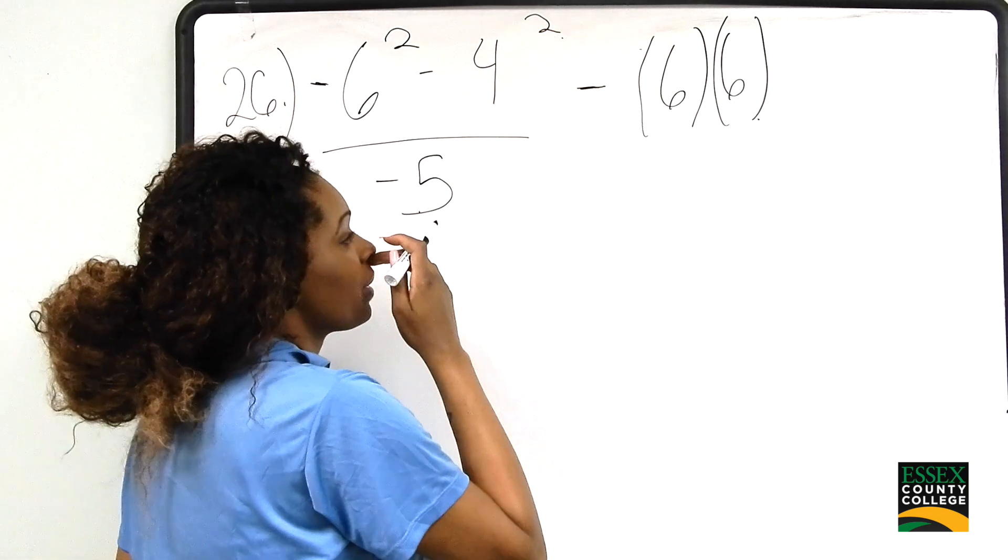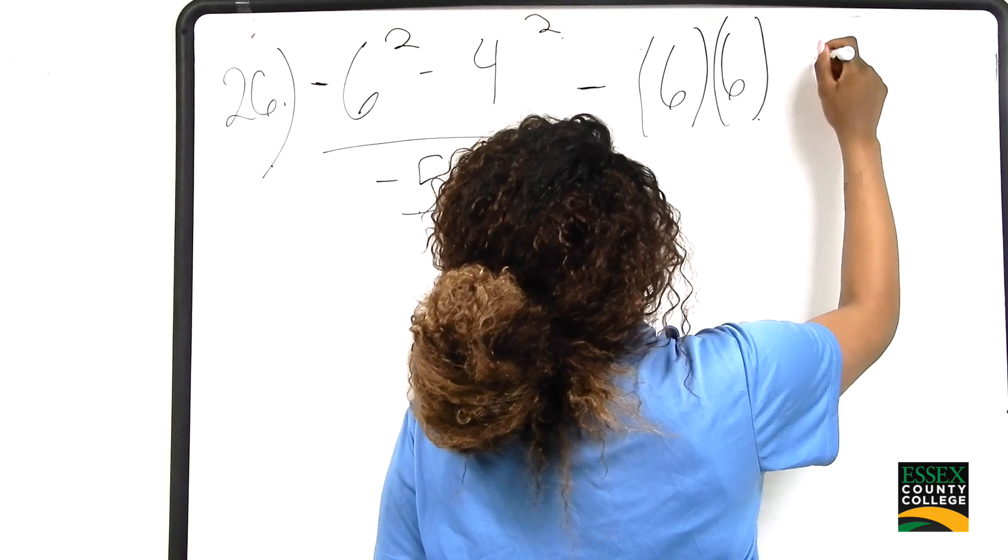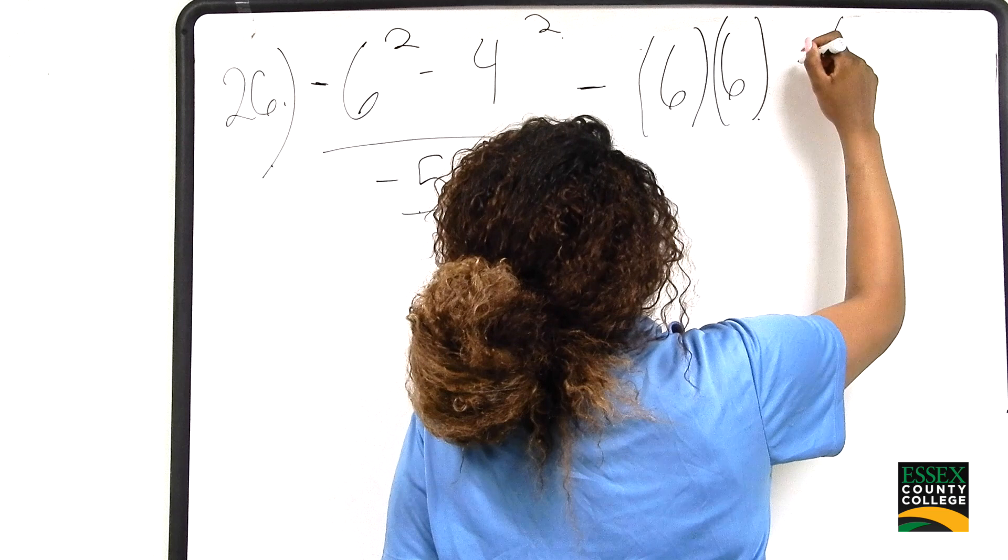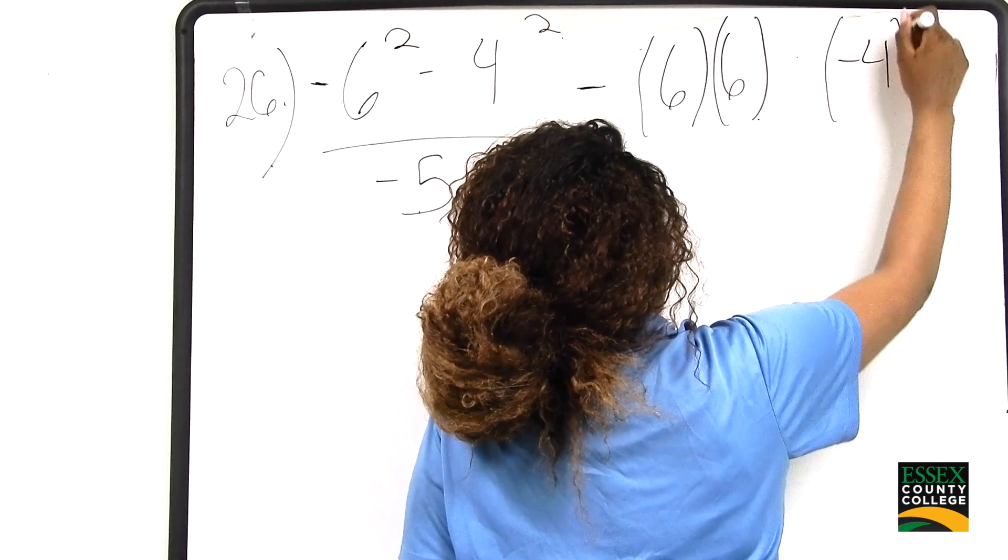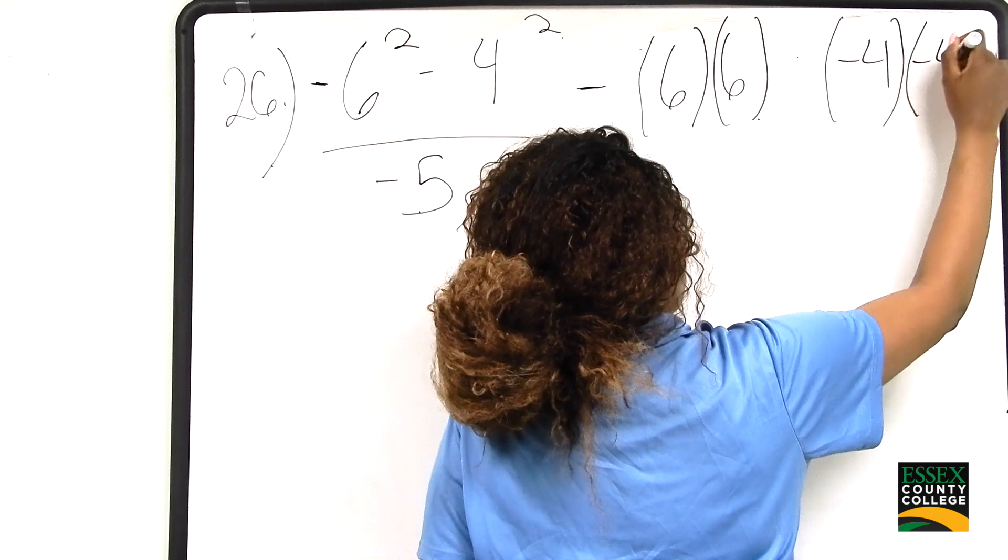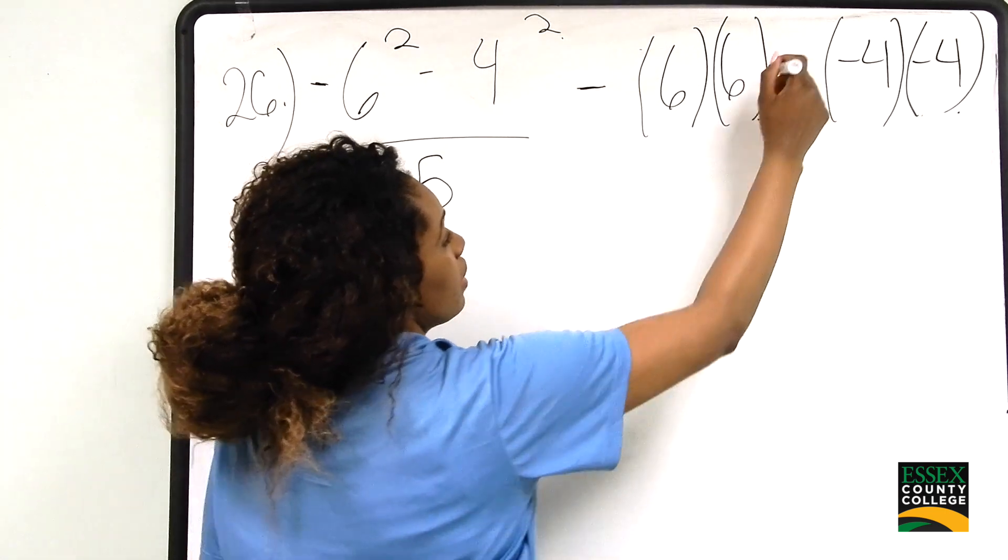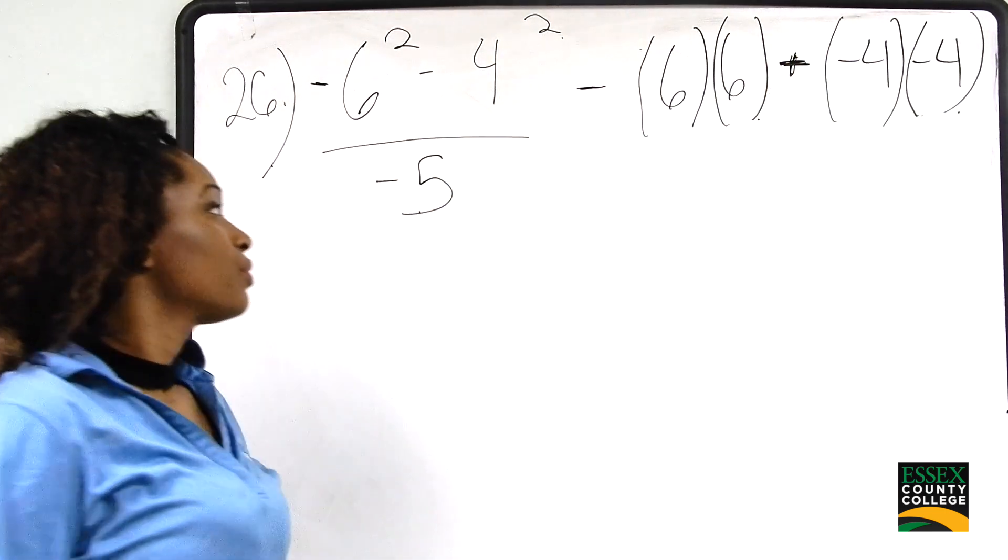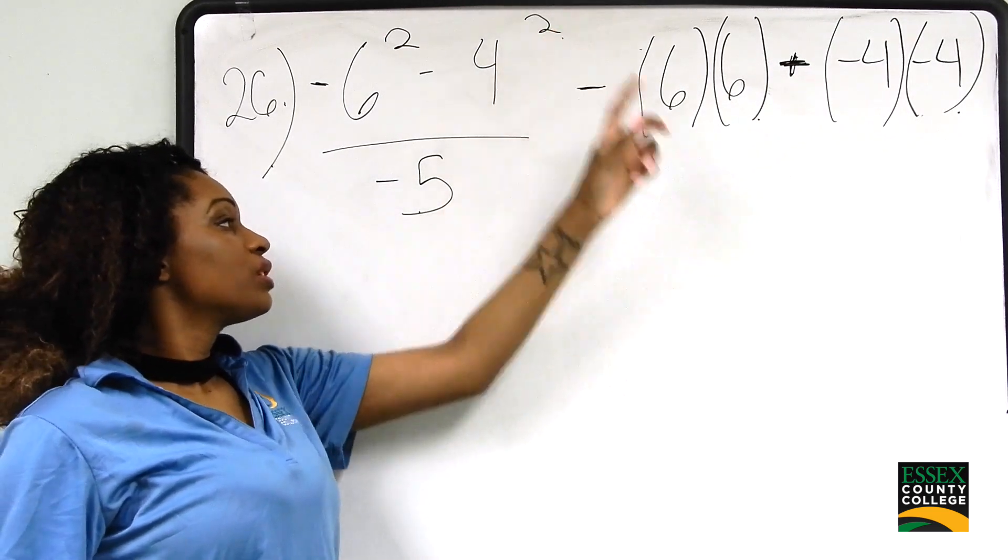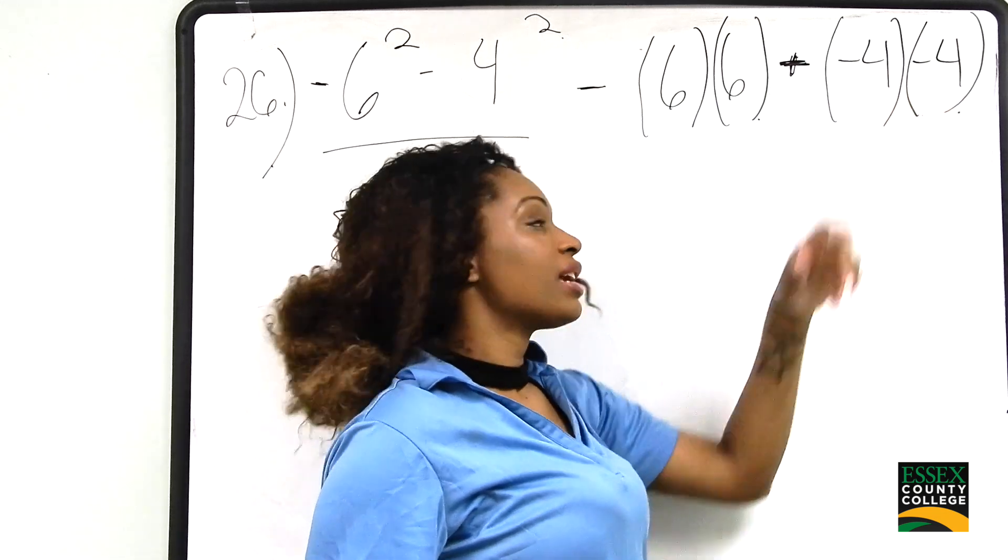Now it comes to the negative 4 squared. We're basically taking negative 4 and squaring that - negative 4 times negative 4. And we're going to add these two together. So this 4 cubed, you're basically taking negative 4 and multiplying it times itself.